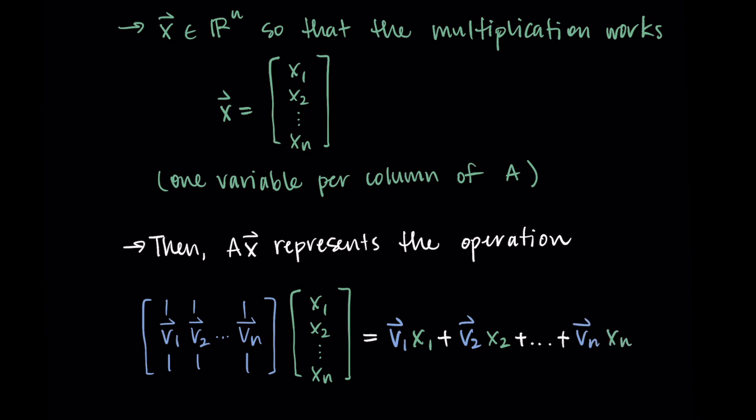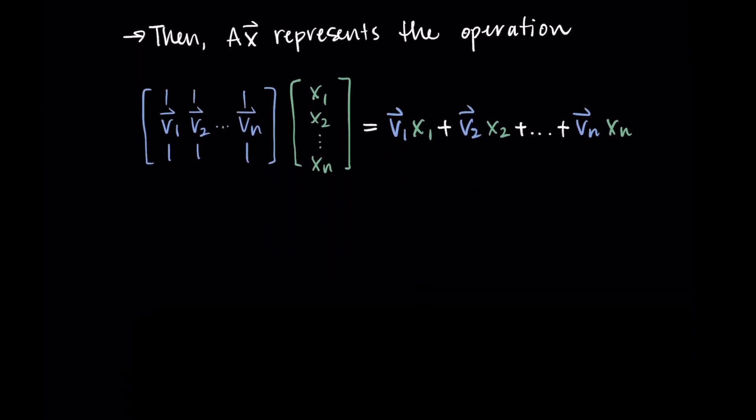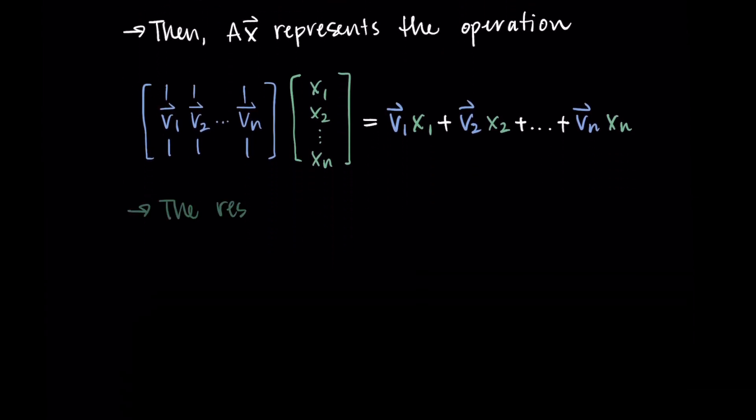So we do v1 times x1 plus v2 times x2 all the way through vn times xn, and this resulting vector is our b vector.